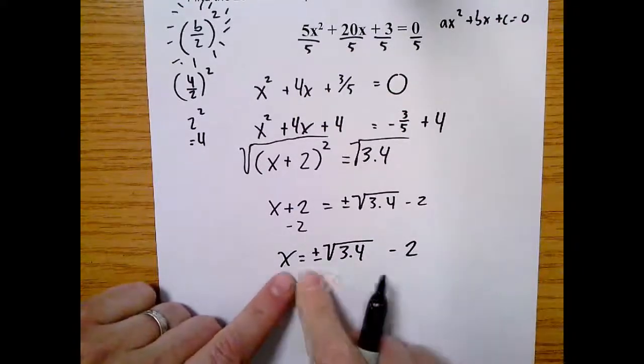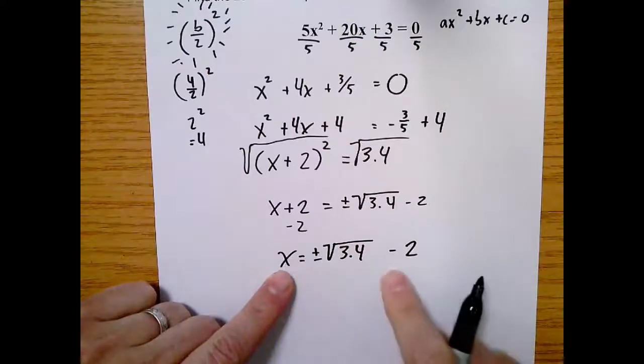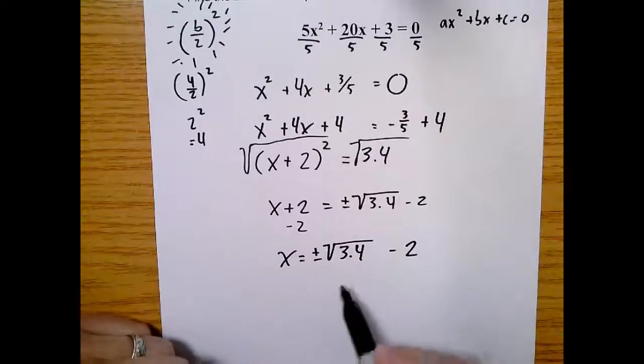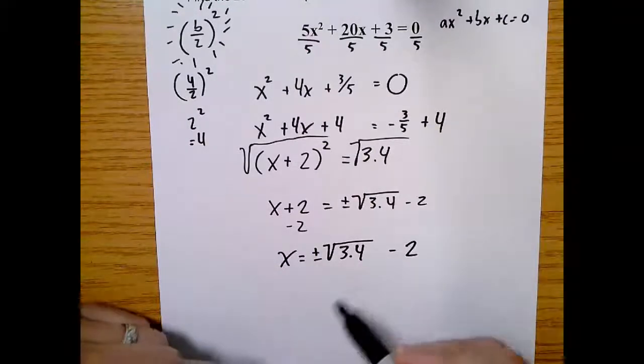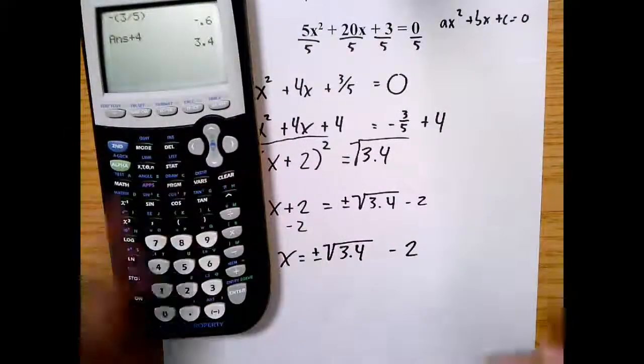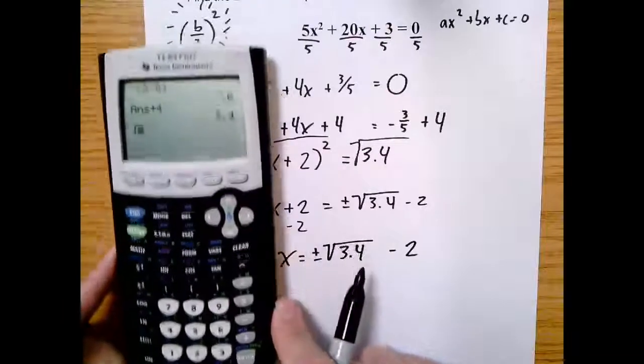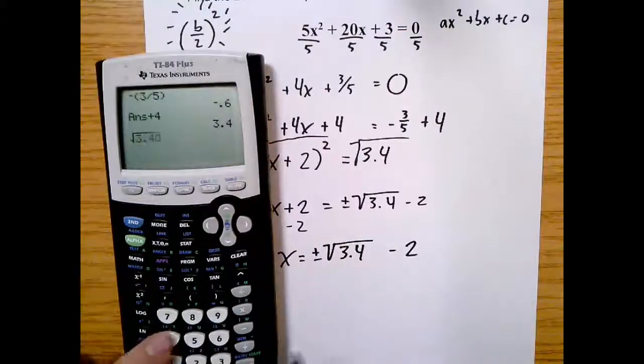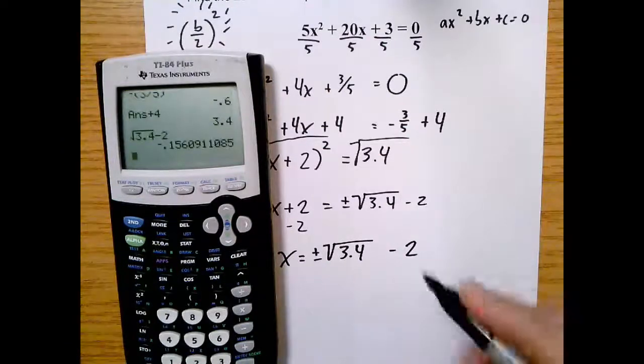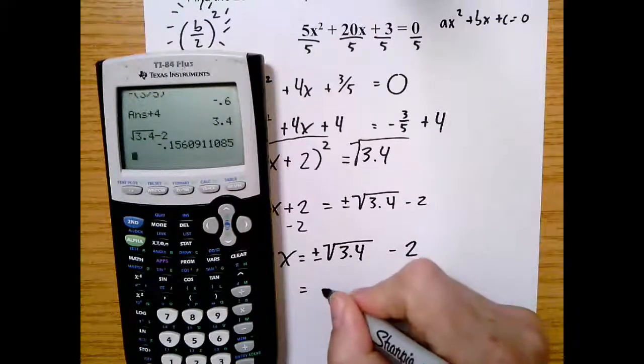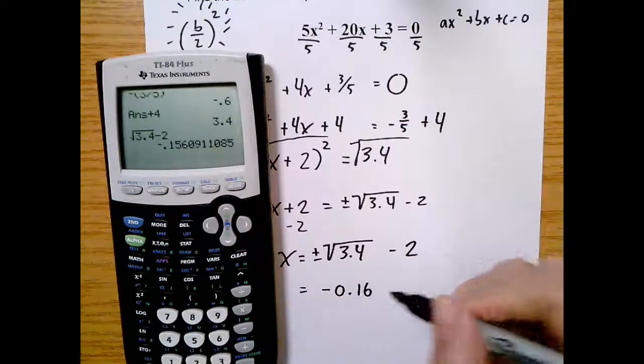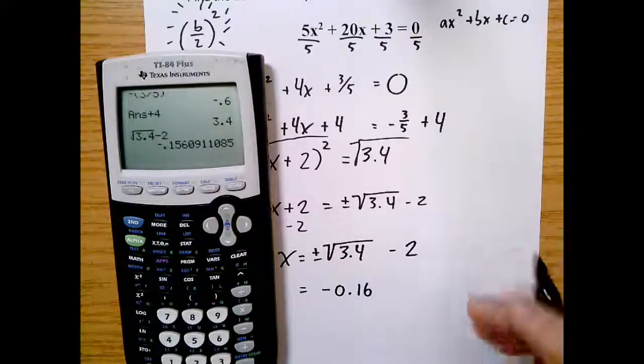And that will give us our two solutions. Technically speaking, your two solutions are right here in front of us, but that's really not going to give us a good visualization of where our parabola is crossing the x-axis. So we can actually just do some quick math and we can use our calculator to help us. We're going to say the square root of 3.4 minus two - that was our positive - and we're going to get negative 0.16.